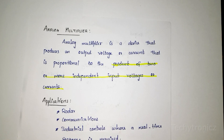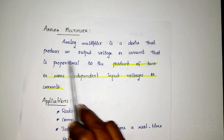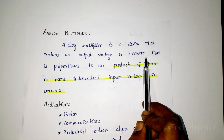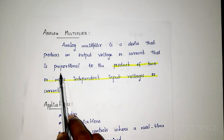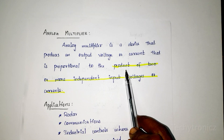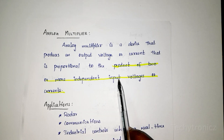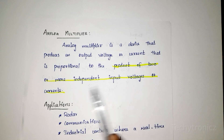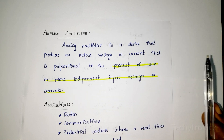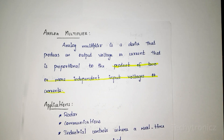Hi students, today we are going to learn about analog multiplier. What is analog multiplier? The output voltage or current is directly proportional to the product of two or more independent input voltages or current. That is, output is directly proportional to the product of the input.